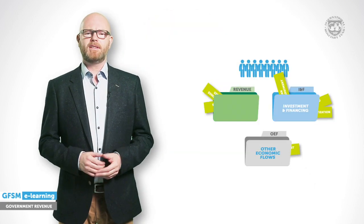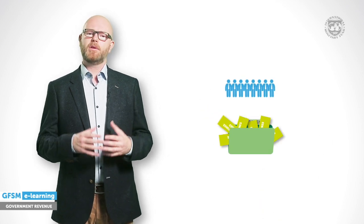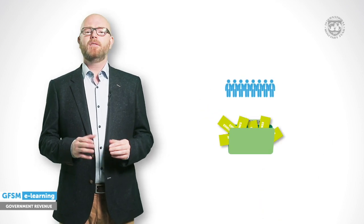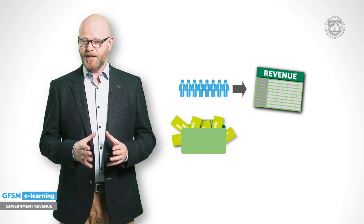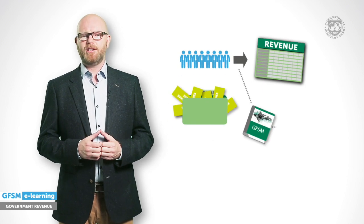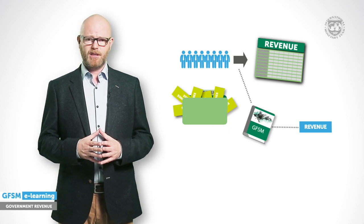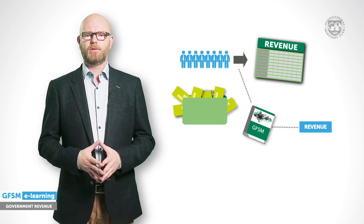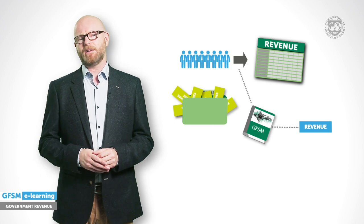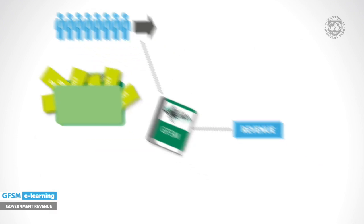Determining the recording of various types of transactions has important implications. Distinguishing between revenue and financing affects key analytical measures such as the government's deficit or surplus and by definition net worth. Once the staff has finished sifting through all of the budgets and has determined which inflows are considered revenue, they can start compiling the revenue table. GFSM provides a detailed classification scheme according to economic types of transactions, allowing for meaningful analysis of individual revenue components and international comparisons.